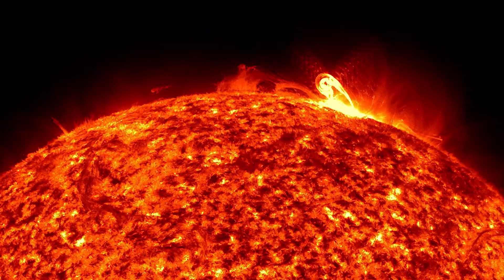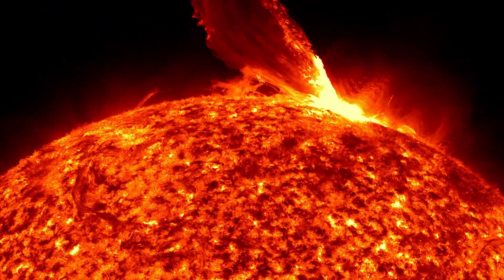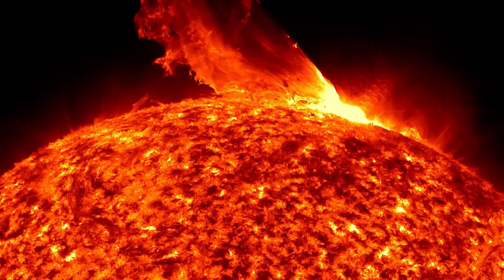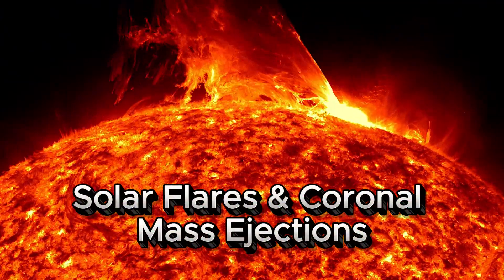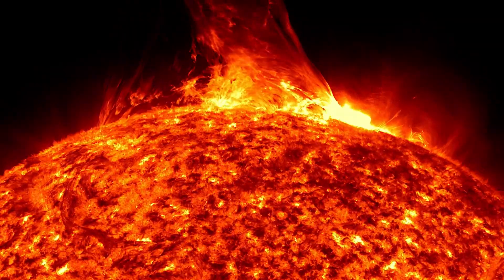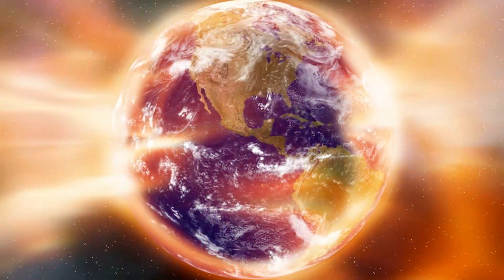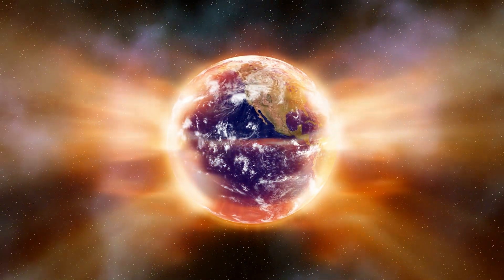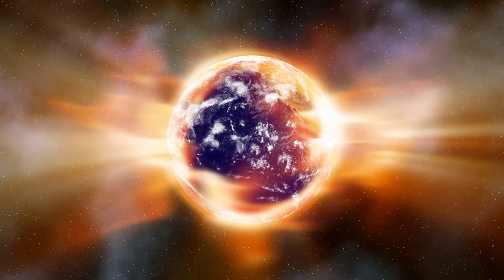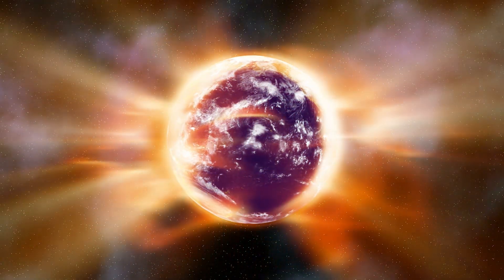Our Sun is not a calm, gentle star. It's a nuclear reactor, prone to outbursts. Solar flares and coronal mass ejections hurl charged particles into space. If aimed at Earth, they can overload power grids, knock out satellites and bathe astronauts in dangerous radiation.